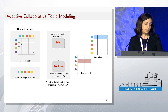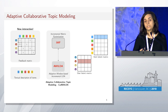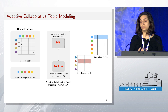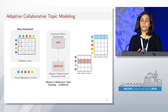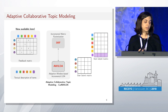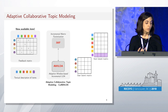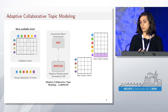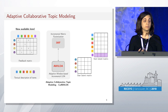How does our framework work? Considering we're receiving a new interaction, we use the matrix factorization component in order to update the corresponding user model and the item model. When we receive a new item, we use the topic modeling part in order to extract the topics from the text describing the item and add it to the existing model.